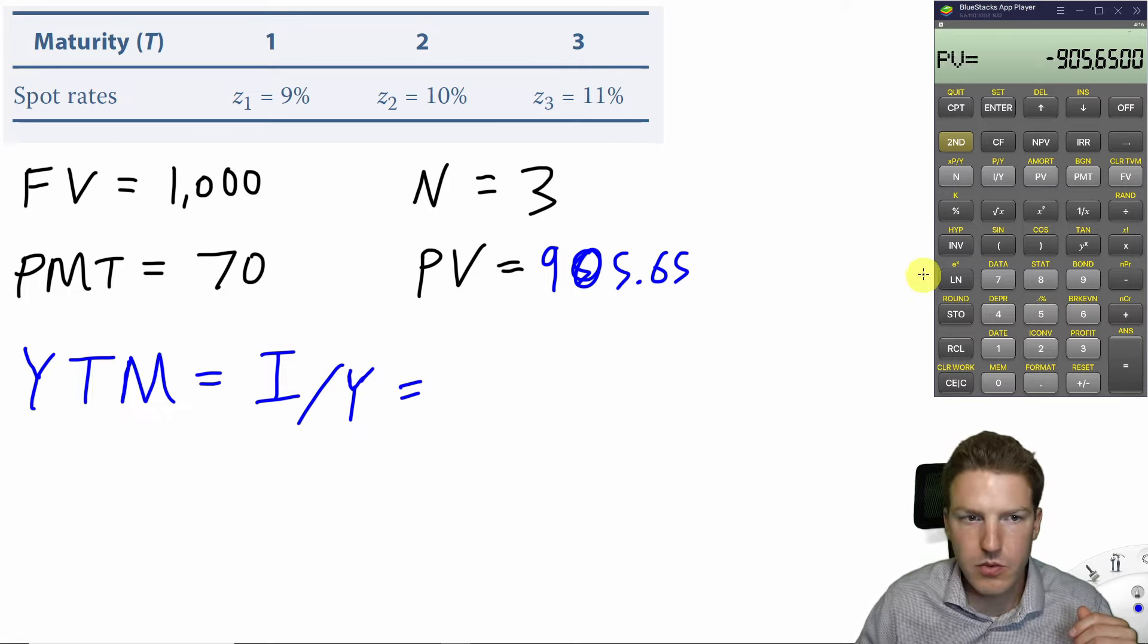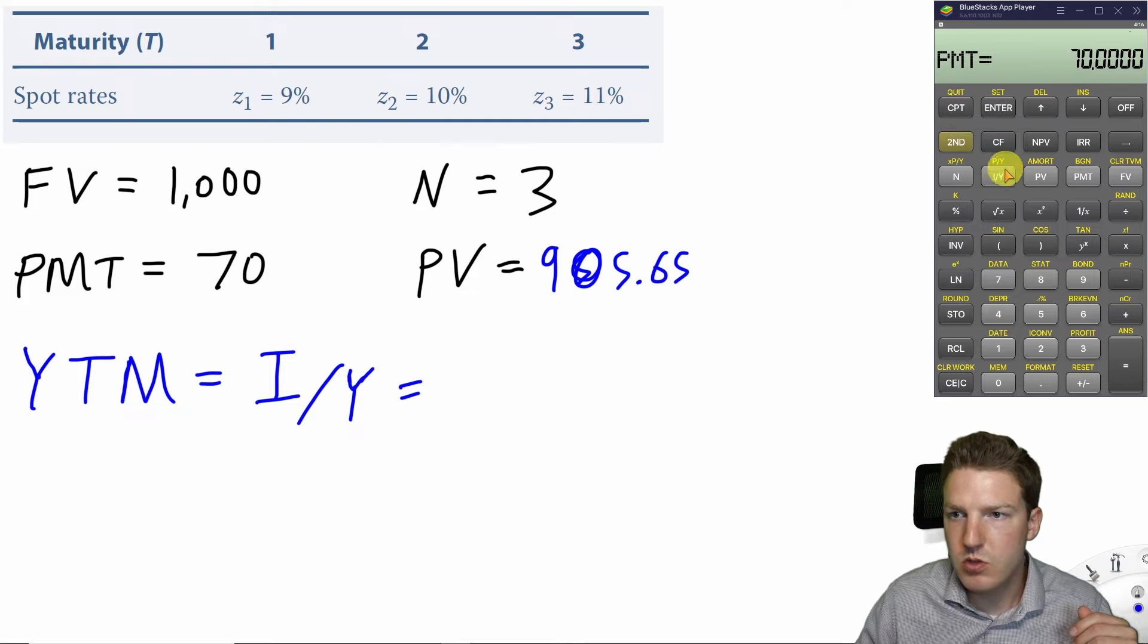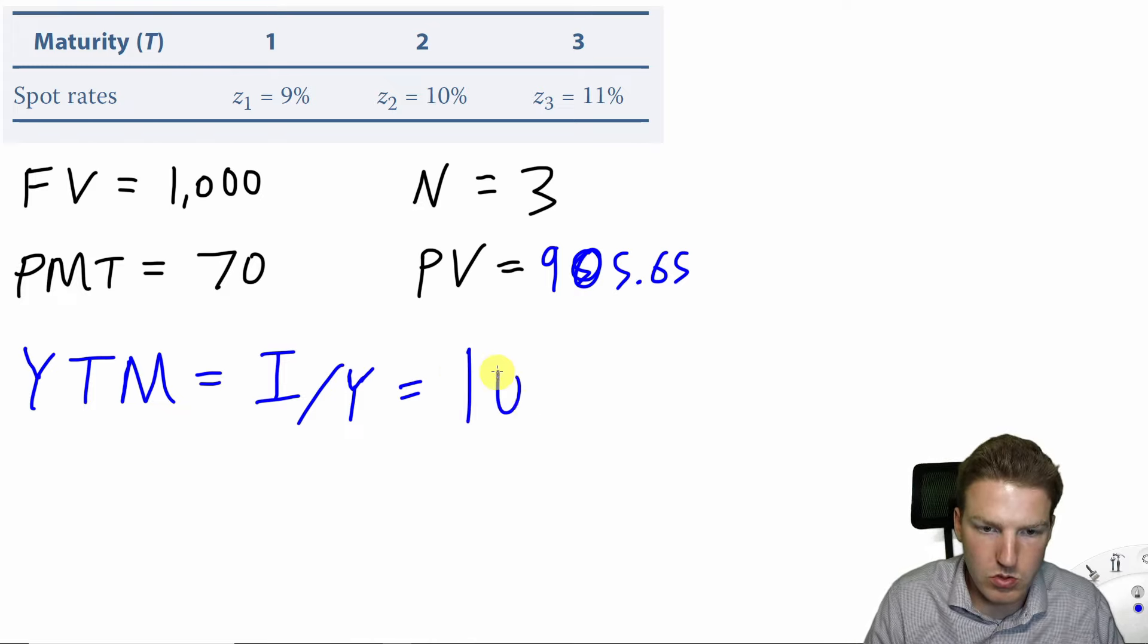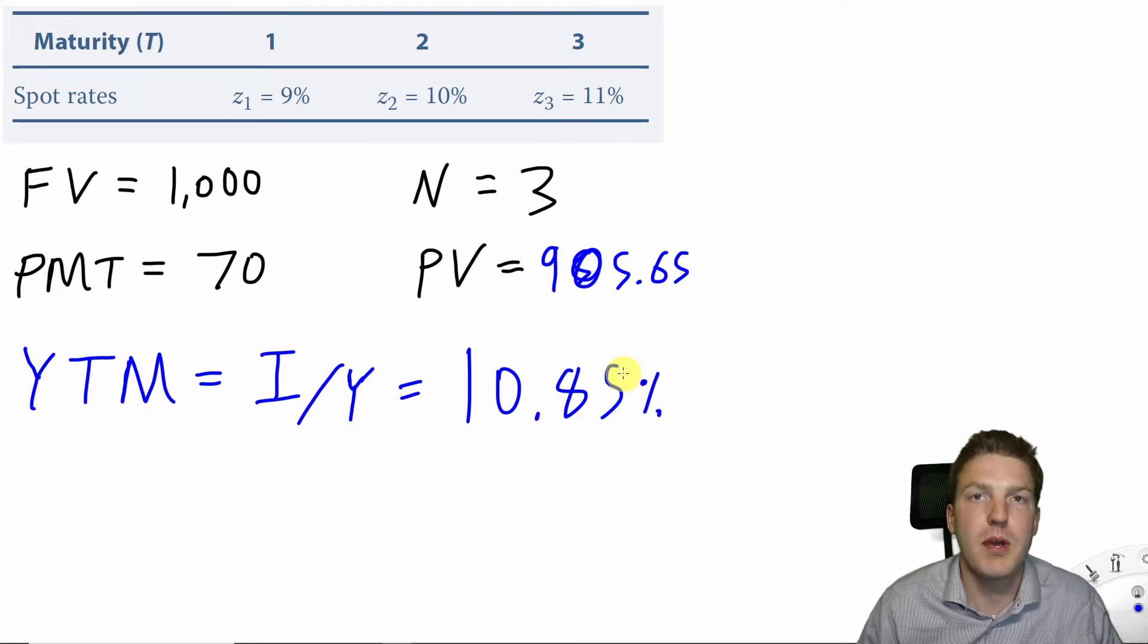and $70 for payment, and then we will compute the interest per year. Interest per year is the same as the yield to maturity, which equals 10.85% for this coupon-paying bond.